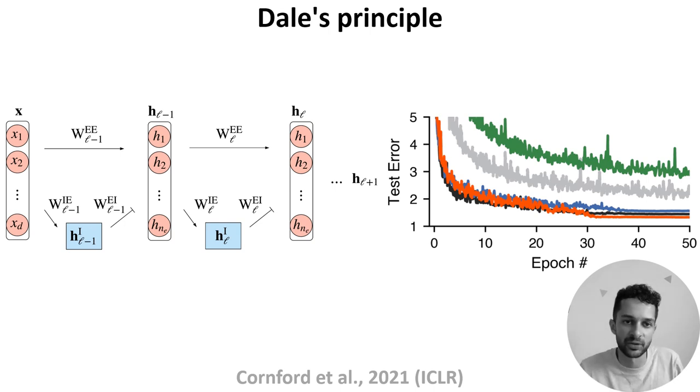To explore this question, Jonathan Cornford and colleagues built ANNs in which each unit was either excitatory or inhibitory. This is shown on the diagram on the left in pink and blue. It turns out that these networks are difficult to train with standard gradient descent and end up performing worse than standard ANNs. You can see this on the right graph where the black curve shows the performance of a standard ANN and the green curve shows a simple implementation of networks which respect Dale's principle.